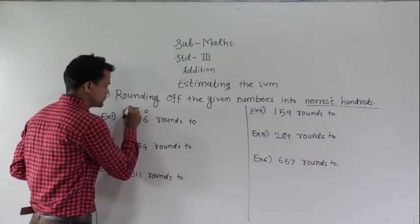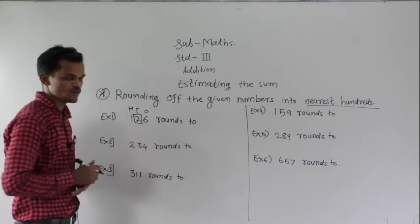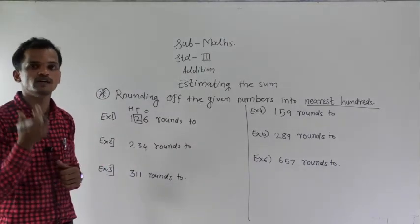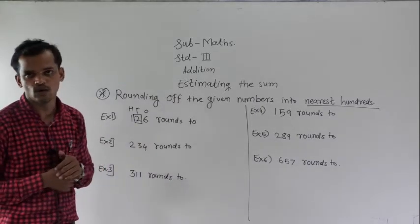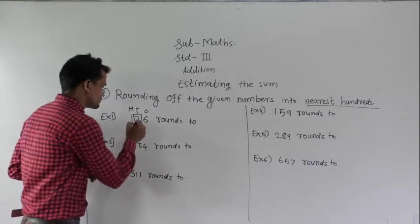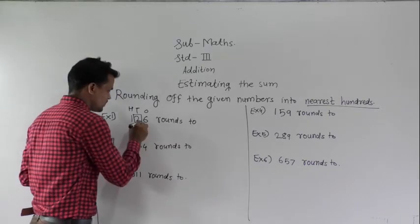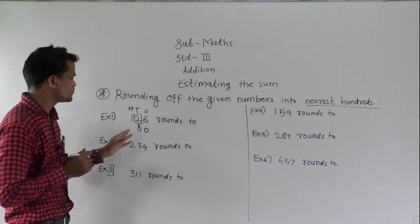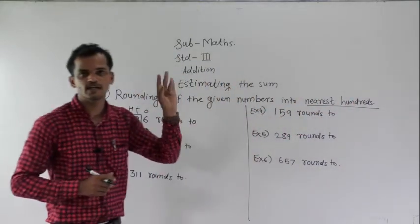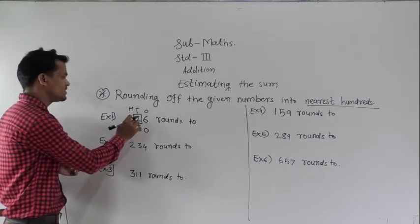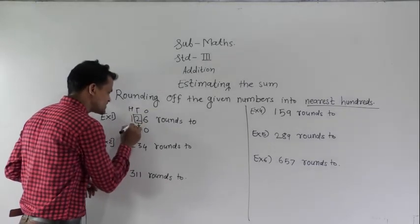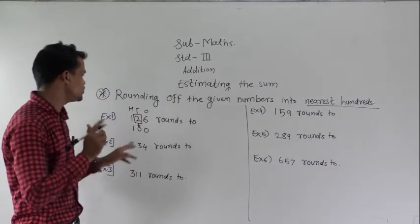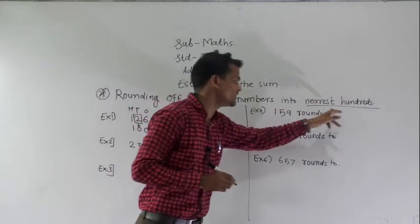For 126, the tens place digit is 2. Since 2 is smaller than 5, this number will be rounded down. Write 0 under the 2 and 0 at the ones place as well, because we are rounding to the nearest 100. Do not change the hundreds place digit. So 126 rounds to 100.